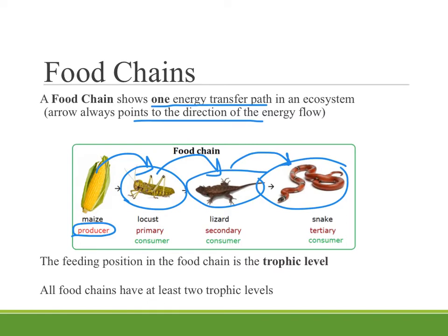The feeding position in the food chain — whether it's the first level of the producer or if it's one of the consumers — this is known as the trophic level. Trophic refers to feeding. If you remember, autotroph is something that self feeds, that can produce its own food source. All food chains are going to have at least two trophic levels — at least a producer plus the consumer that is eating that producer.